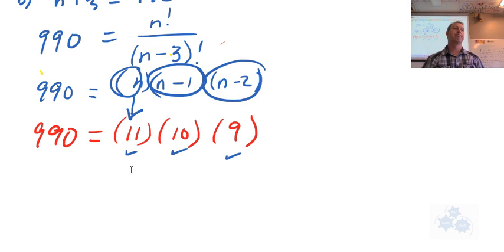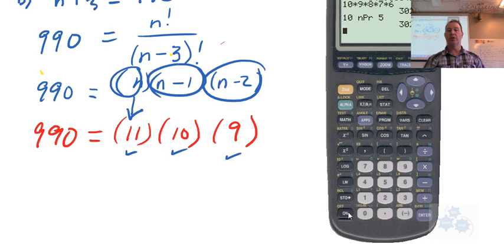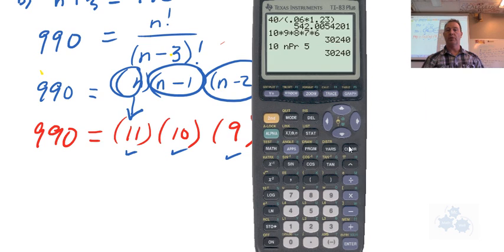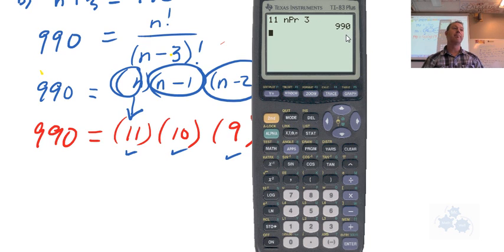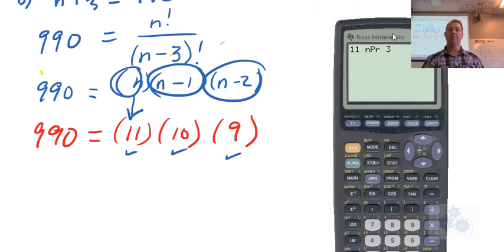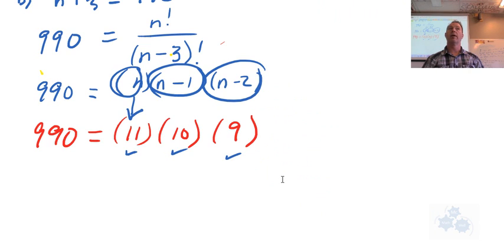Any questions? Okay, so N is 11. And, of course, you can double check that. You can double check that, right, by doing 11. And then, where is it on mine here? Oh, 11 pick 3. And that should be 990. So, N equals 11. All right?